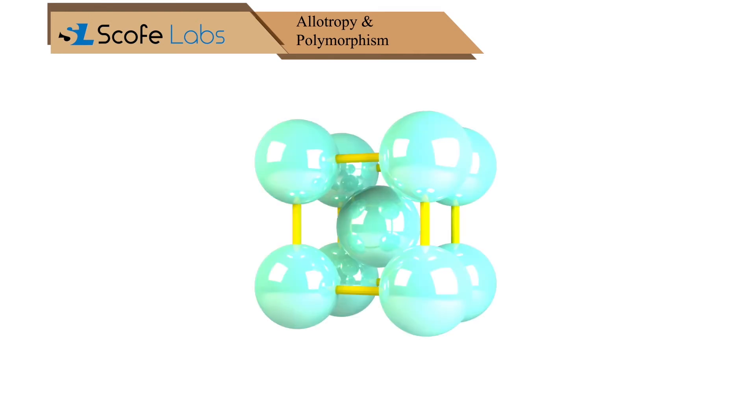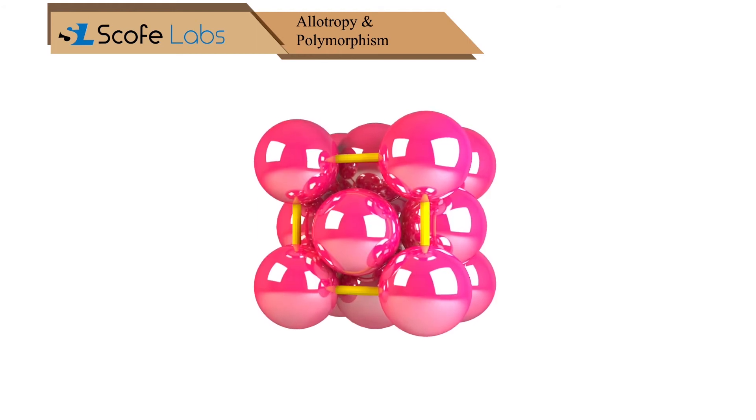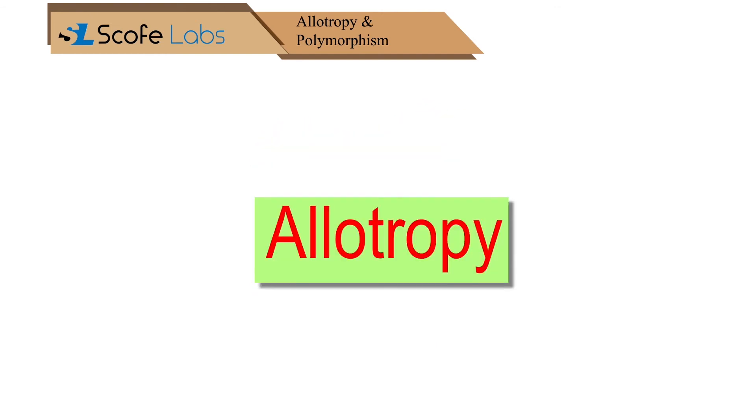Here iron changes its crystal structure from BCC to FCC. This change of crystal structure is called allotropy.